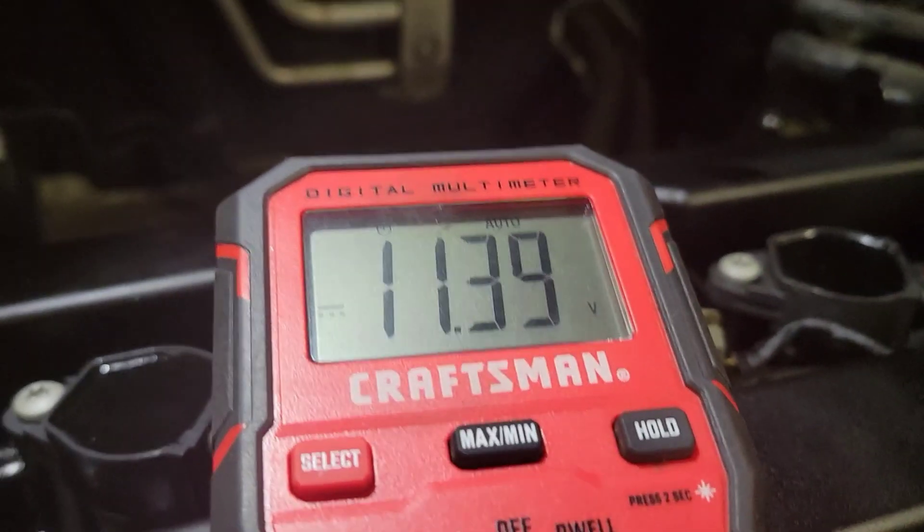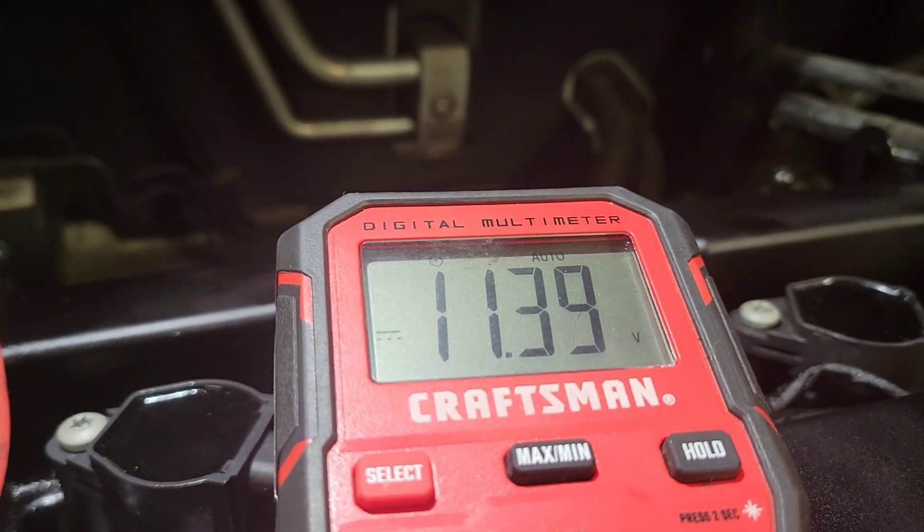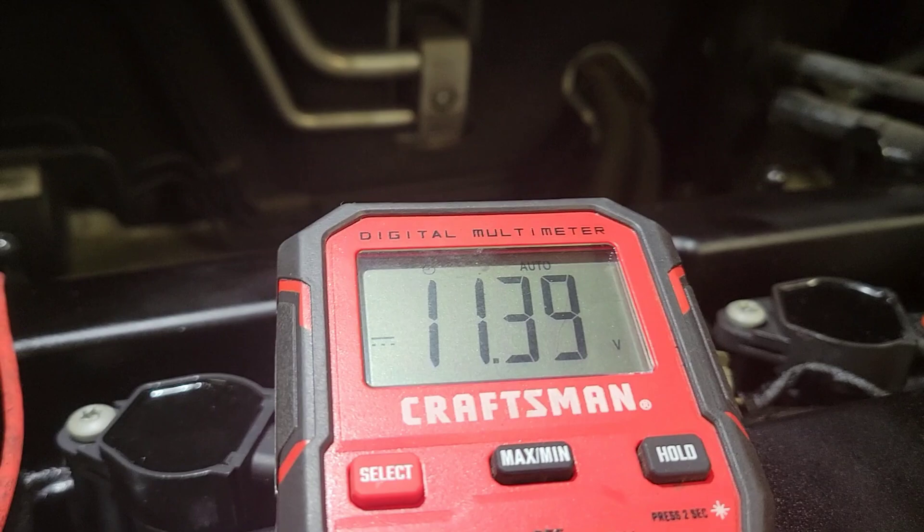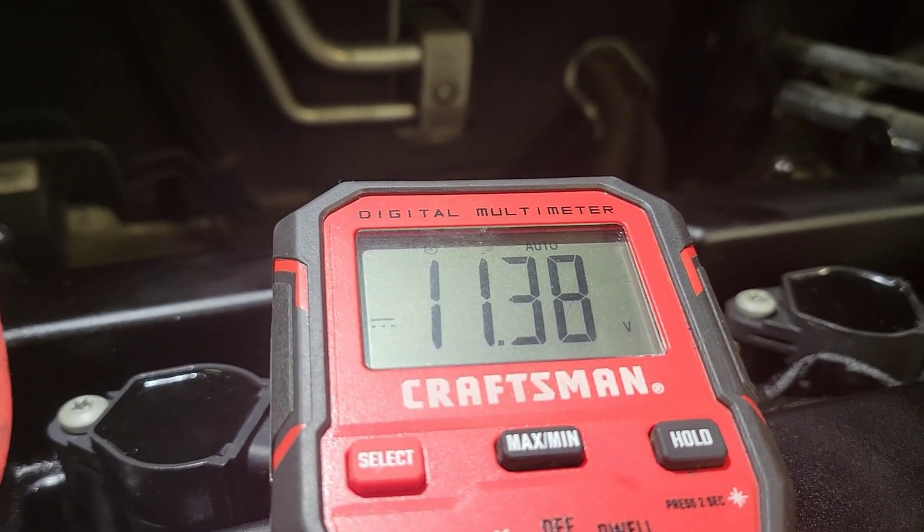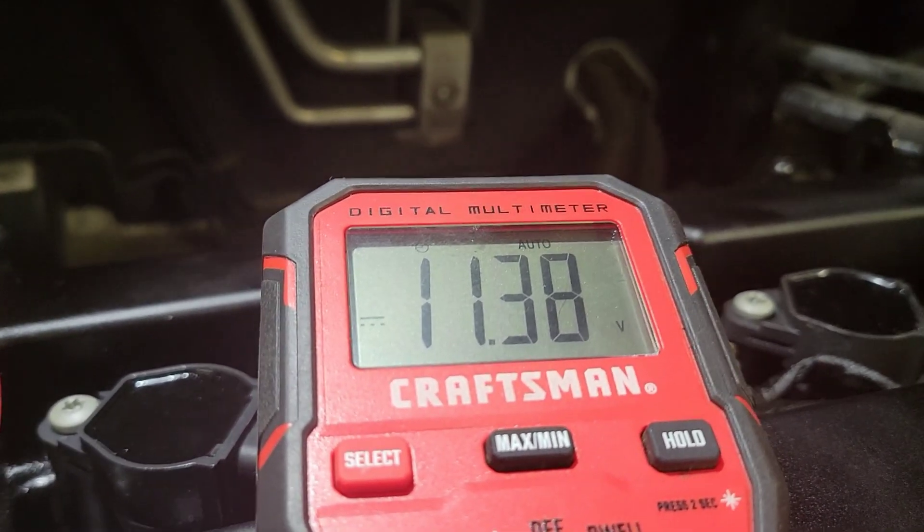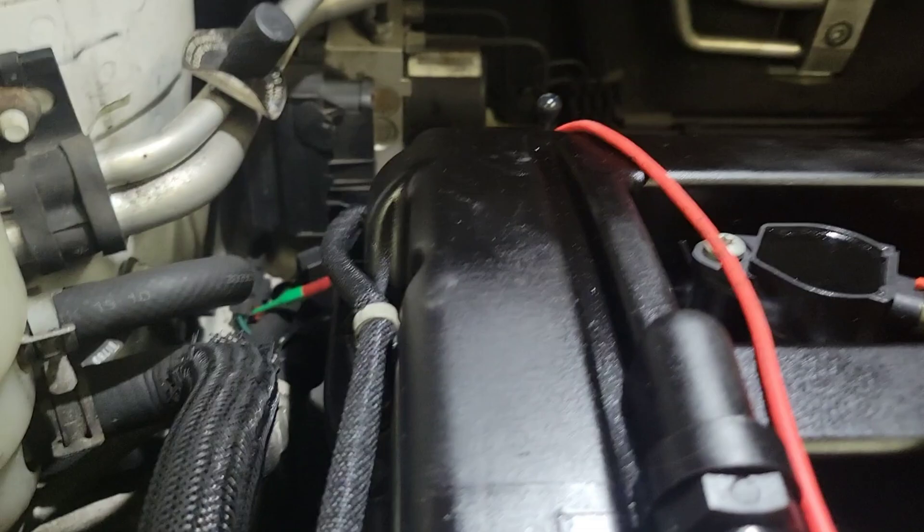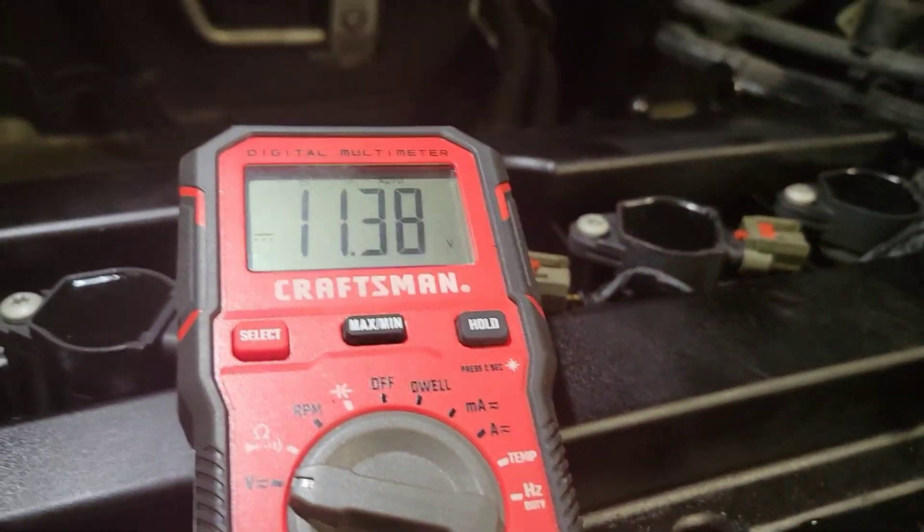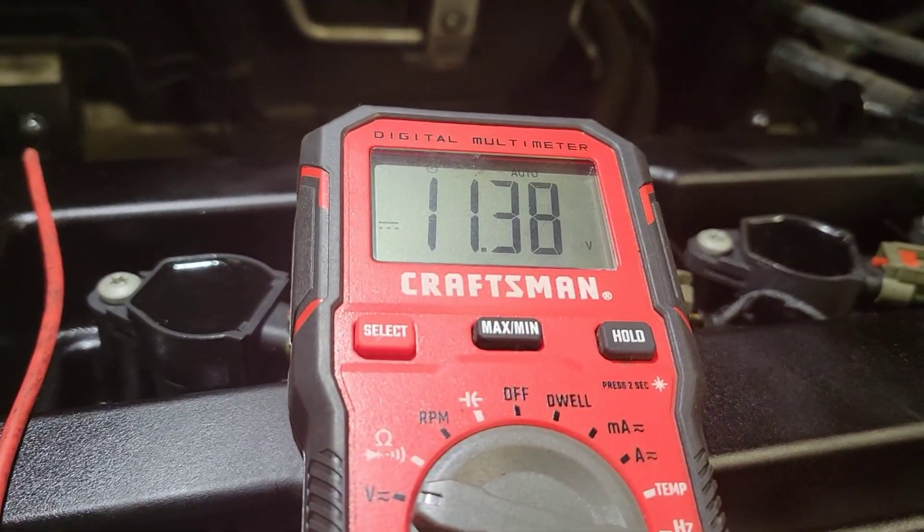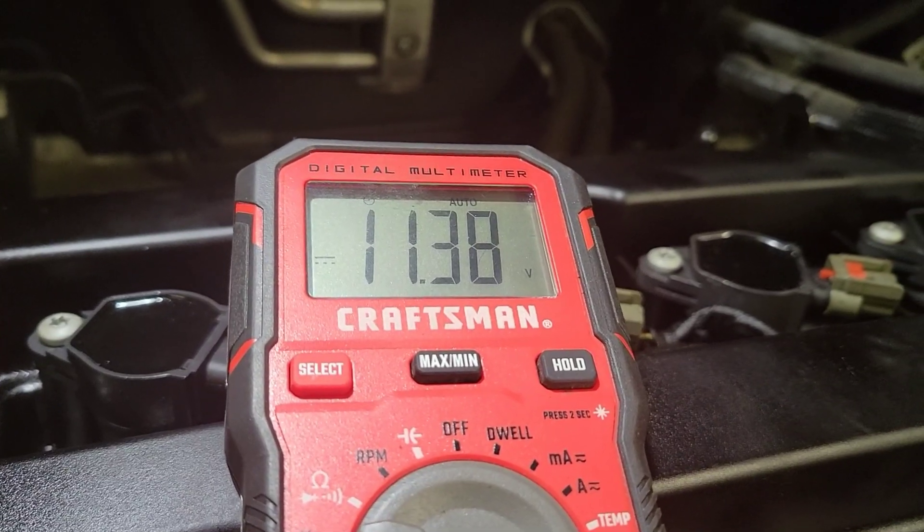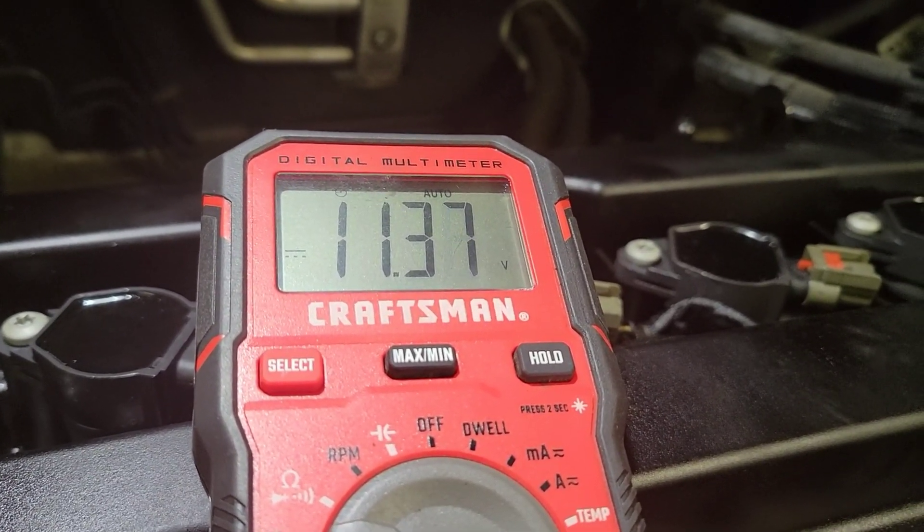I already back probed the sensors and I'm getting on the first wire that I back probed, I was getting nothing going to battery ground. The service data is telling you to use the battery ground for chassis ground, anything for ground instead of the actual speed sensors ground. On this, it's confusing. There's a signal return and there's a signal positive. But what we want is the signal positive.